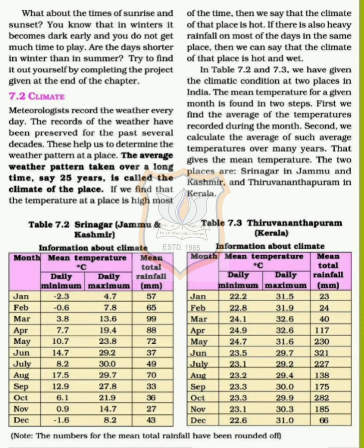In tables 7.2 and 7.3, we have given the climatic conditions at two places in India. The mean temperature for a given month is found in two steps: first, we find the average of the temperatures recorded during the month; second, we calculate the average of such average temperatures over many years.